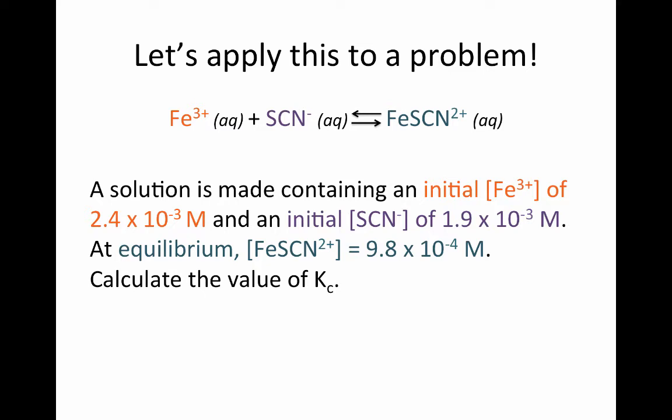Let's apply those steps to an actual problem. We have iron 3+, ferric iron, combined in aqueous solution with the thiocyanate ion. In practice, what happens is you create a colored complex of iron thiocyanate, and because it is colored, we can measure the concentration of that very easily. We start out by making a solution where we know the initial concentrations of ferric iron and thiocyanate ions. At equilibrium, we can measure the iron thiocyanate concentration, and we need to calculate the value of the equilibrium constant.